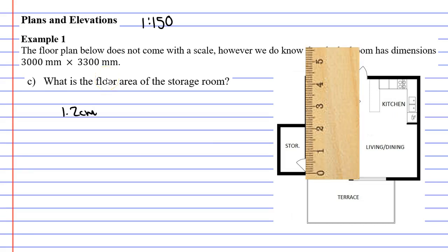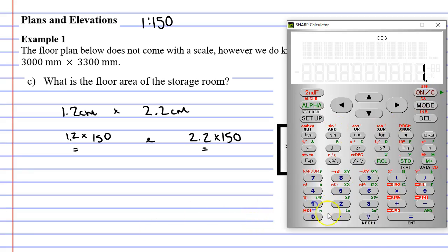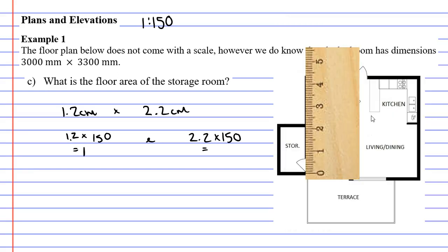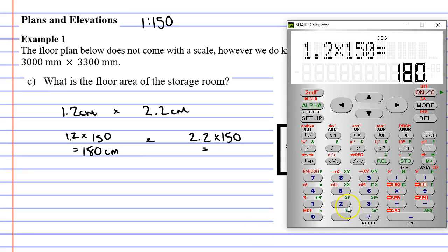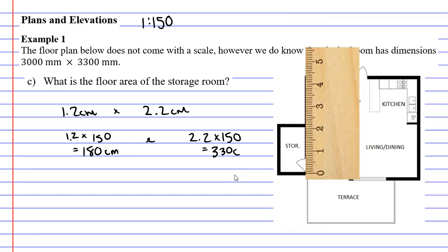We need to make this 150 times bigger. 1.2 times 150 equals 180 centimeters and 2.2 times 150 gives us 330 centimeters.